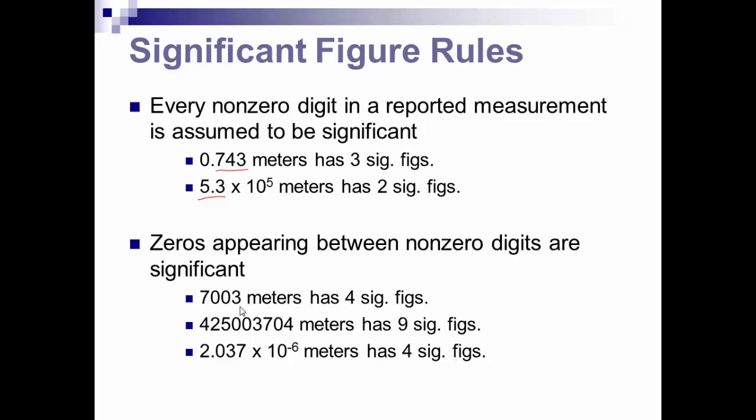First off, every non-zero digit in a reported measurement is assumed to be significant. So in this one, there's three non-zero digits, so it has three significant figures. In this one, there's only two, so it only has two significant figures.